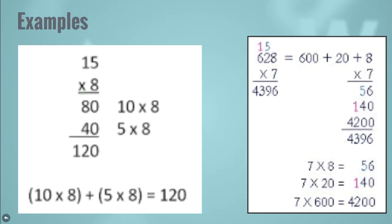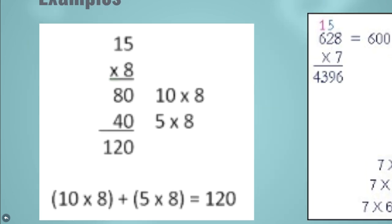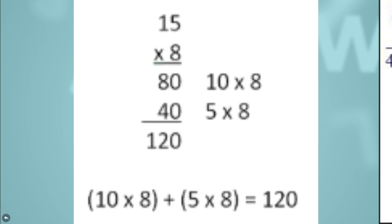Now I am going to multiply a 2-digit number by a single digit: 15 multiplied by 8. First, we multiply 8 with the units digit, which is 5, and we get 40. Then we multiply 8 with the tens digit, which is 10, and we get 80. Then we add 80 and 40, which gives us 120.